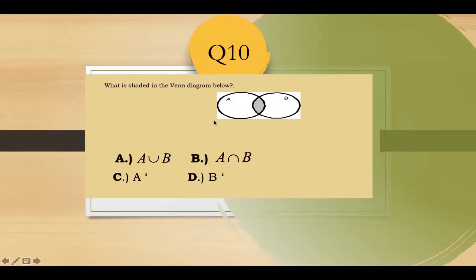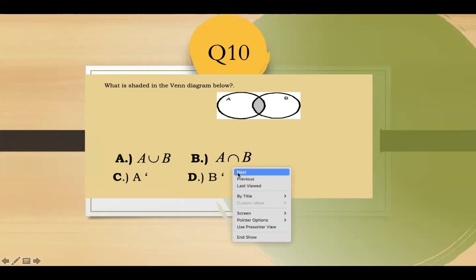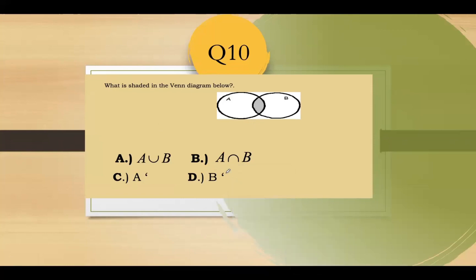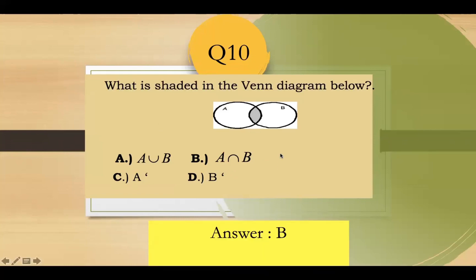Question number ten: what is the shaded region in the Venn diagram? Since the shaded region is the common area between the two sets, this is called the intersection. The name is A intersection B. The answer is letter B.